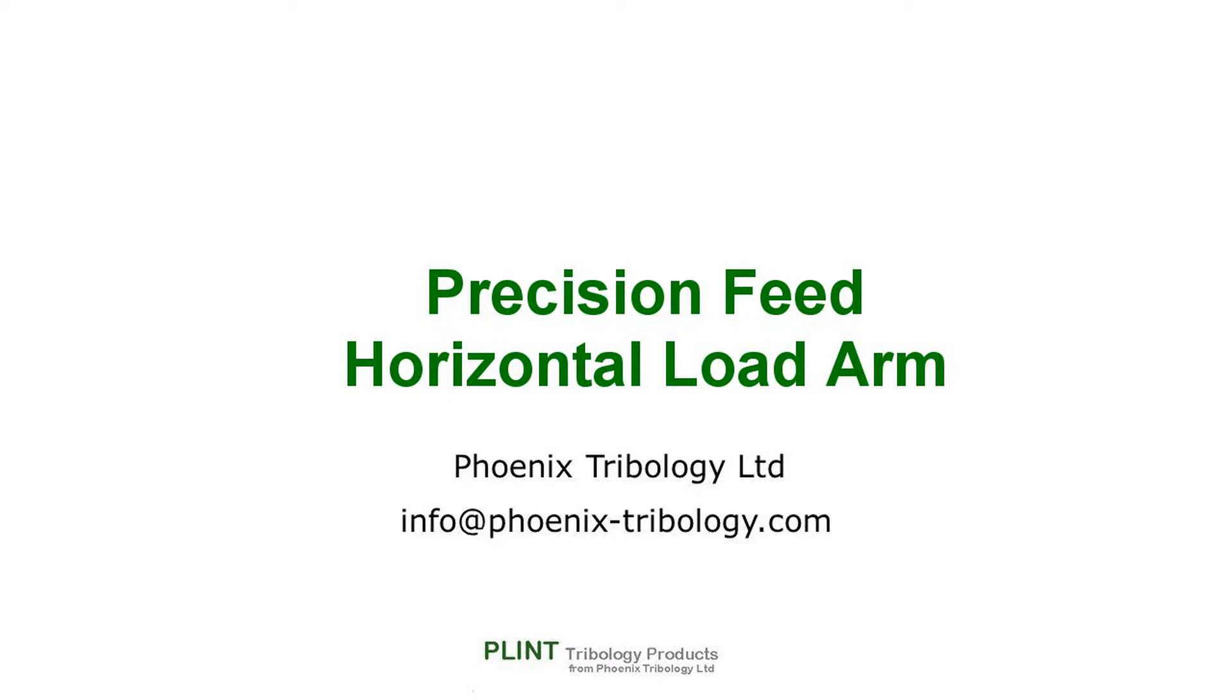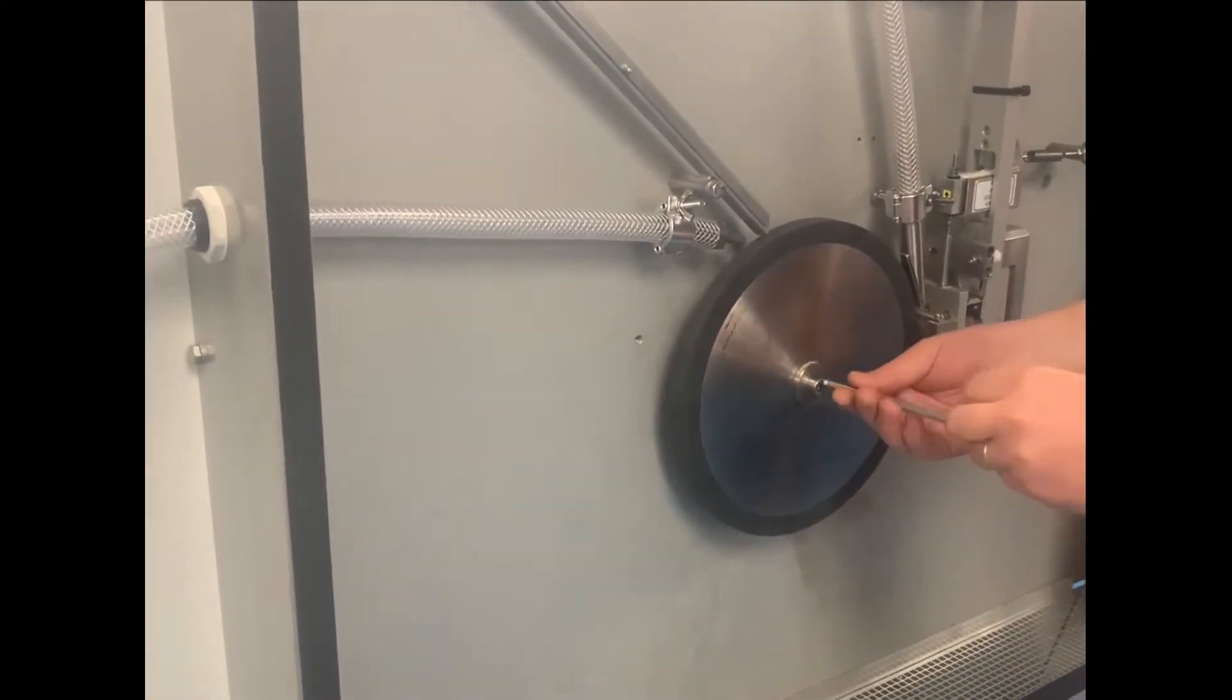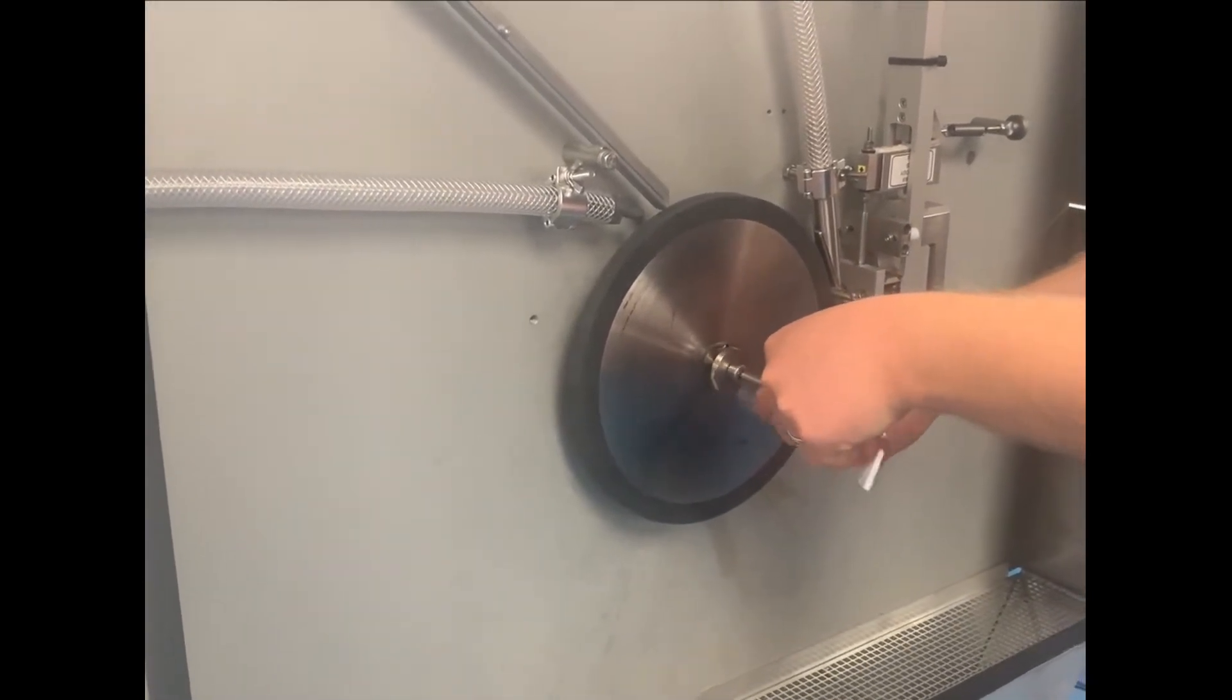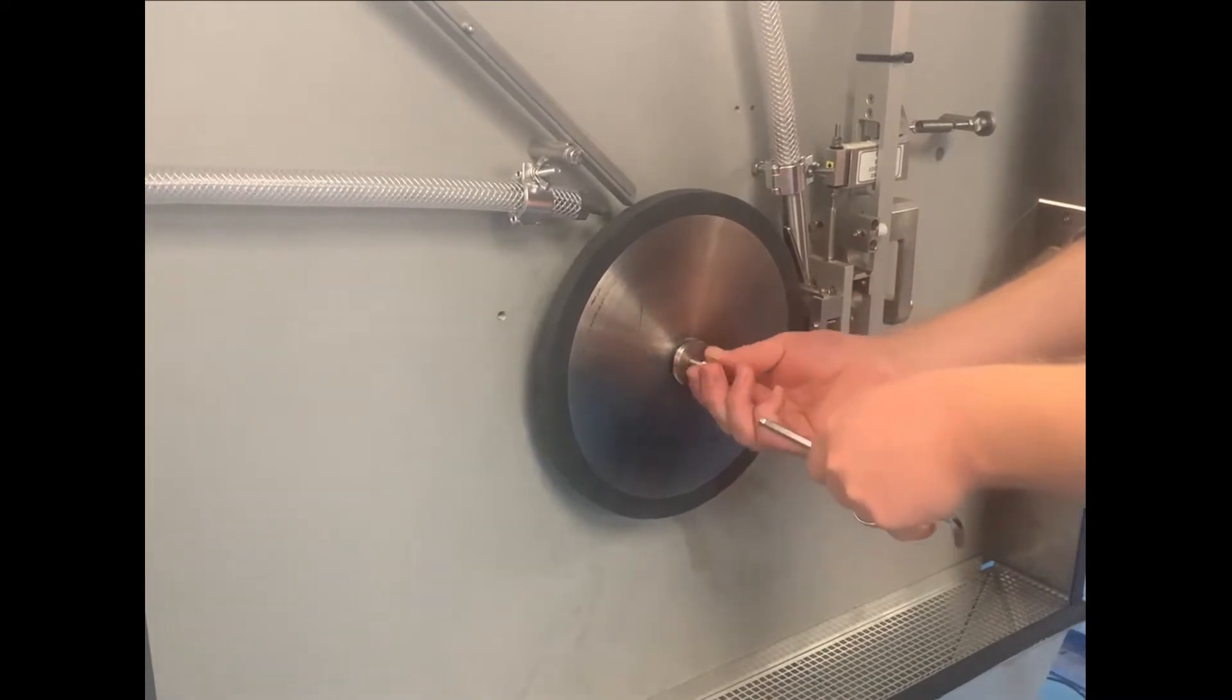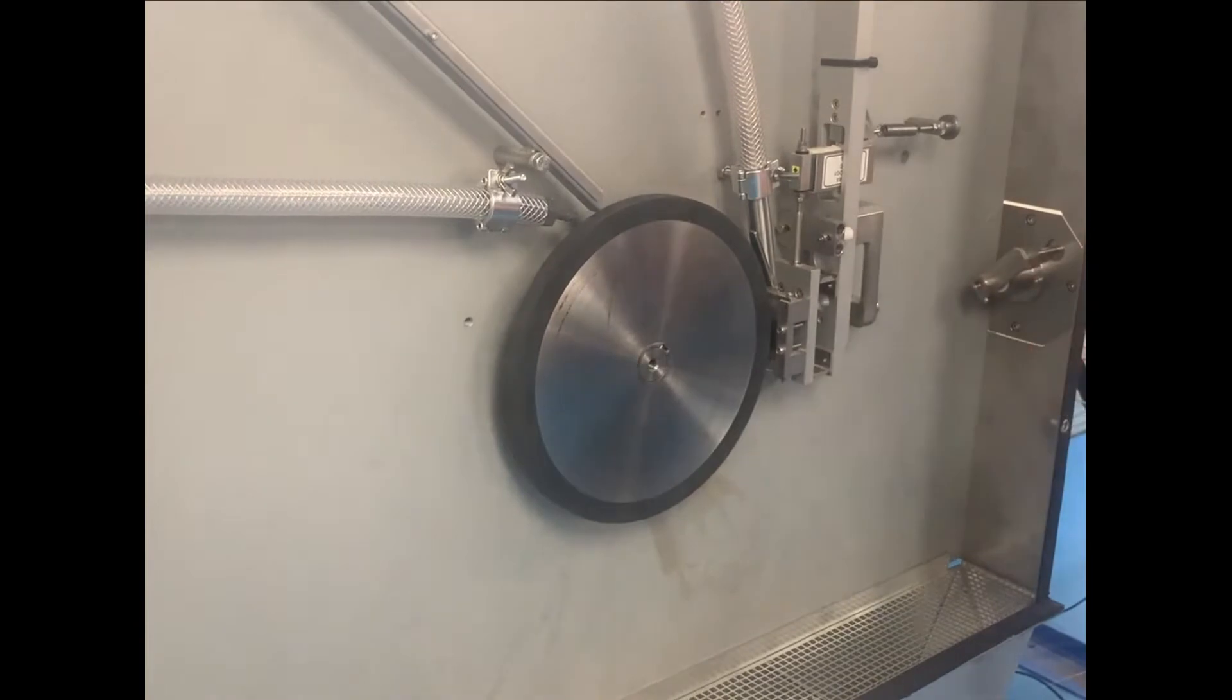To convert to precision horizontal feed, start by removing the test wheel.